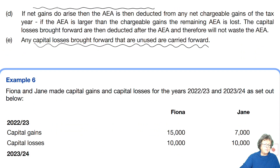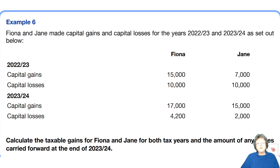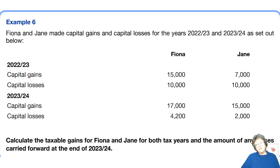Let's have a look at example number six. We have two individuals: Fiona and Jane. They both had capital gains and losses in 2022-23 and 2023-24. Fiona had gains of 15,000 and losses of 10,000 in 2022-23, and then gains of 17,000 and a loss of 4,200 in 2023-24. Jane is the other way around — she had gains of 7,000 and losses of 10,000 in 2022-23, and then a gain of 15,000 with a loss of 2,000 in 2023-24.